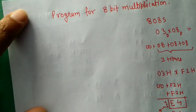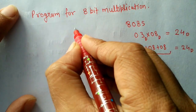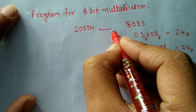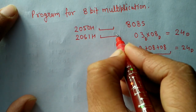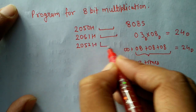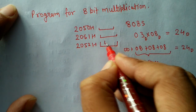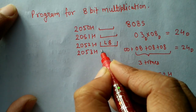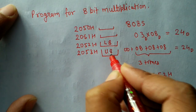Now let's write the program. I am assuming that at address 2050h I will give one number, at 2051h the second number. At 2052h I will store the lower byte of the 16-bit result, and at 2053h I will store the upper byte of the 16-bit result.